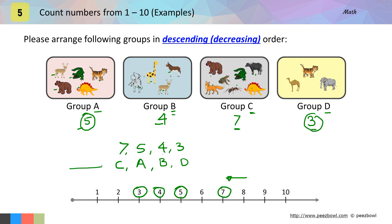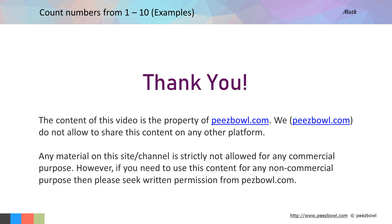So these groups are arranged in decreasing order: group C, A, B, and D. I hope the concept of ascending and descending numbers is clear to you. I have given a few links in the description — you can refer to them to participate in online quizzes and download workbooks. Thank you for watching.